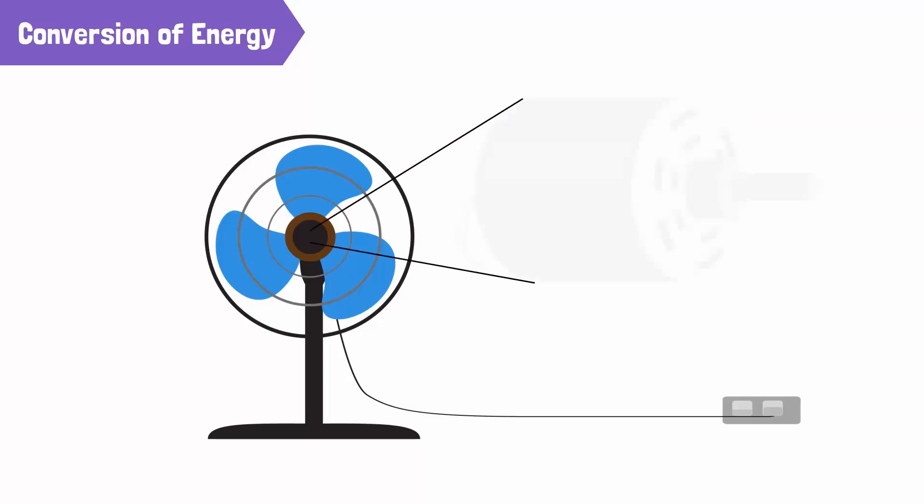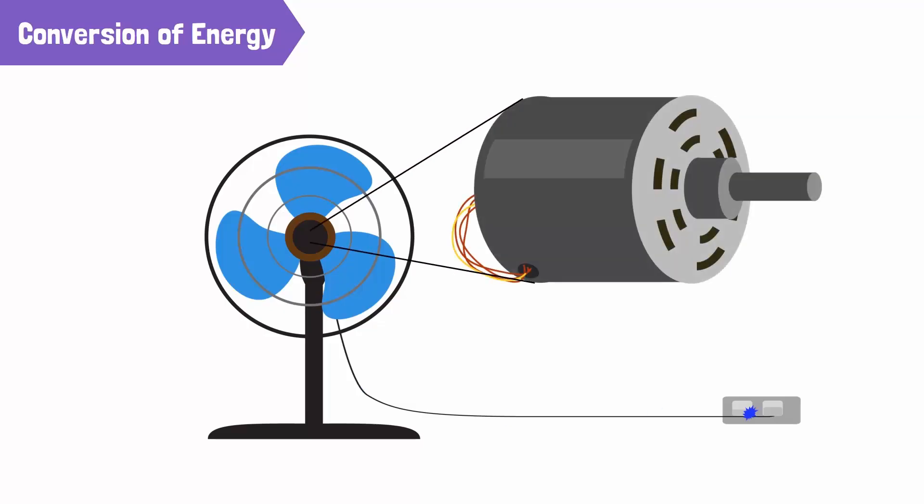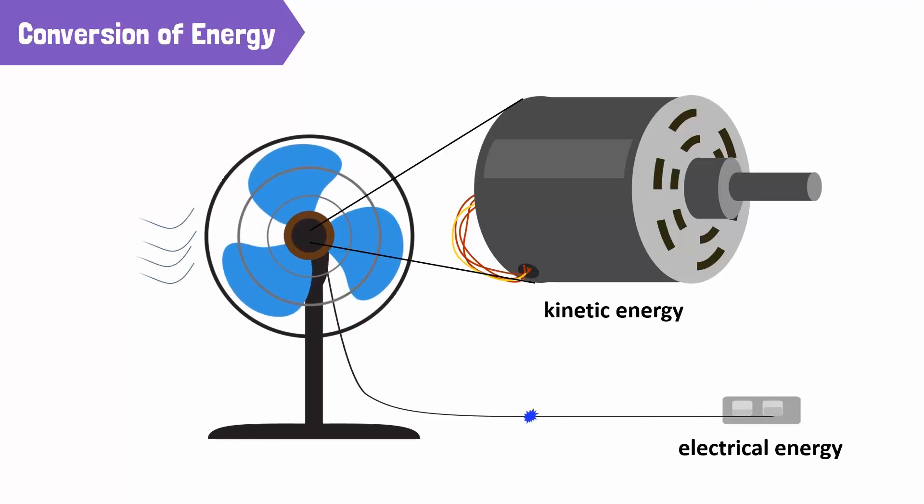There is a motor inside a fan which works when electrical energy is passed through it. This electrical energy is converted into kinetic energy by the motor and causes the motion of the fan's blades. The kinetic energy of the moving blades passes onto the air as the blades rotate. This generates wind energy.